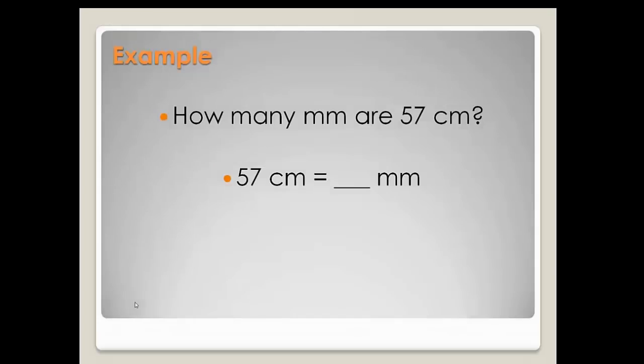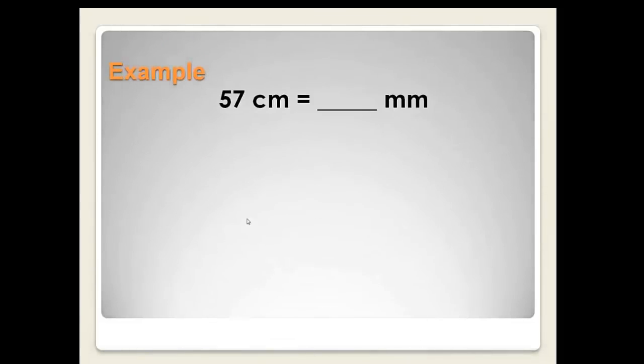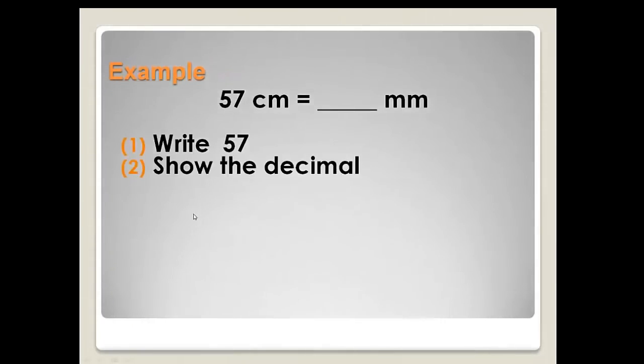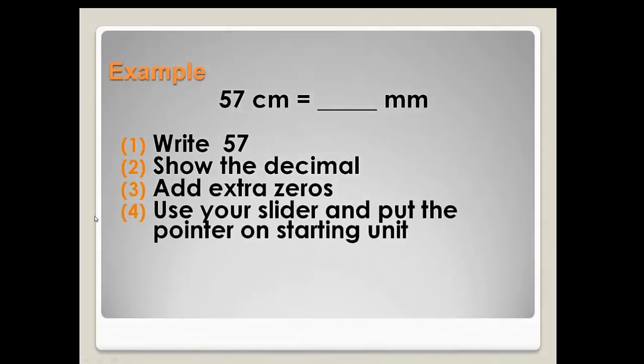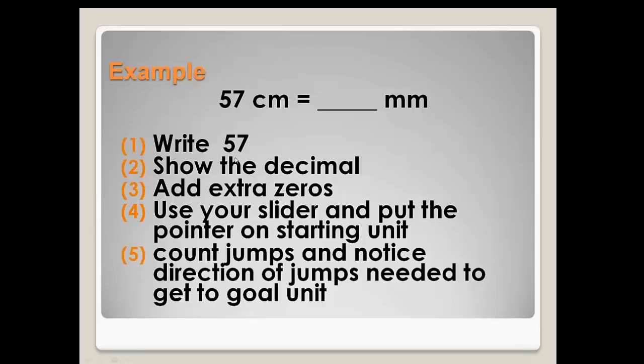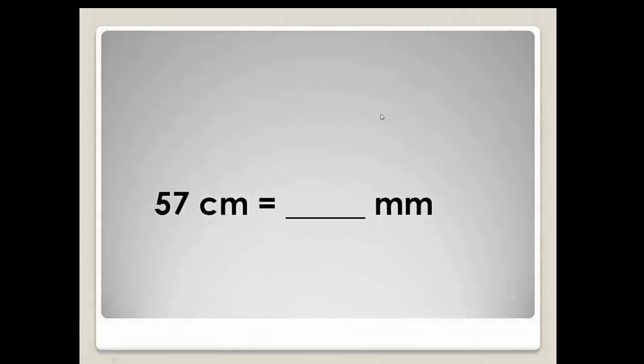So let's do an example. How many millimeters are in 57 centimeters? The number we're starting out with is 57. We're going from centimeters to millimeters. So we're going to write the 57, we're going to show the decimal, we're going to add extra zeros. Use our slider to put the pointer on the first unit, the starting unit, in this case centi, and count the number of jumps and notice the direction needed to get to milli.